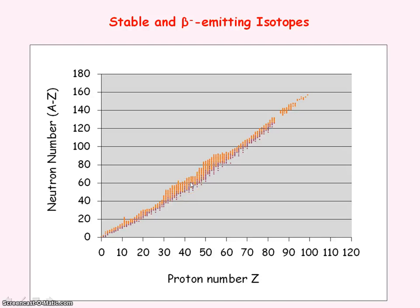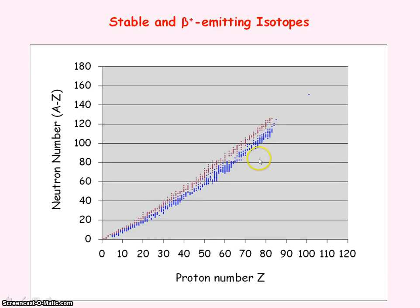This graph shows isotopes undergoing beta minus decay in orange compared with stable isotopes in purple. The beta minus emitting isotopes are above the stable isotopes, indicating they are neutron-rich. The next graph shows isotopes undergoing beta positive decay in blue compared with stable isotopes in purple. The beta positive isotopes are below the stable isotopes, indicating they are proton-rich — they have more protons than neutrons to be stable.